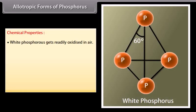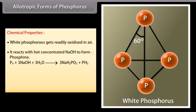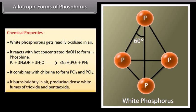Chemical properties of white phosphorus: It gets readily oxidised in air. It reacts with hot concentrated NaOH to form phosphine. It combines with chlorine to form PCl3 and PCl5. It burns brightly in air, producing dense white fumes of phosphorus trioxide and pentoxide.